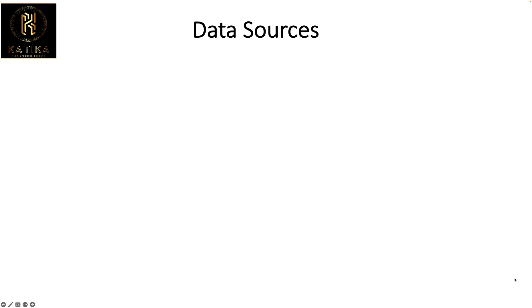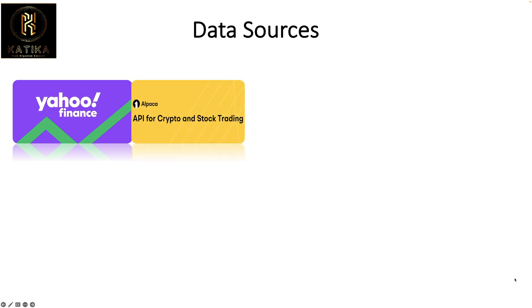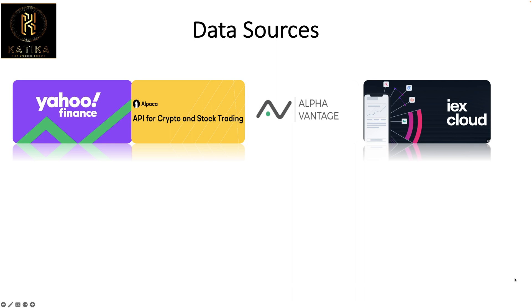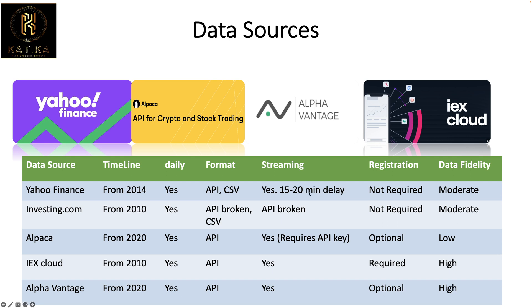Let's look at the data sources. One of the most popular is Yahoo Finance, which provides data for different assets including digital stocks and more. We're also going to look at Alpaca, which is good for back-testing your models. Alpha Vantage is another source. We also have IEX Cloud, which is a very powerful site that provides very extensive data for sentiment, economic reports, and filings.